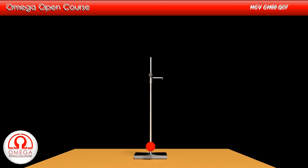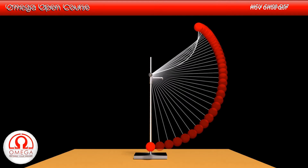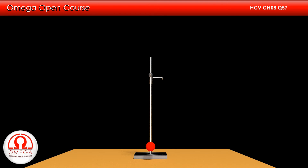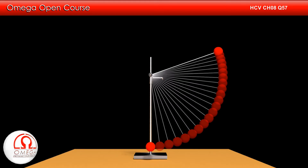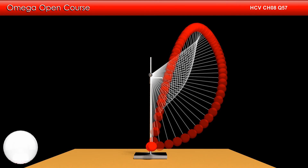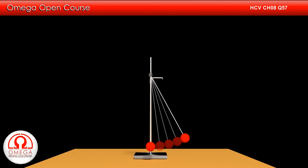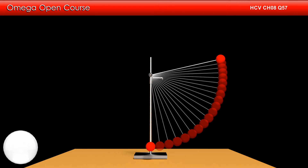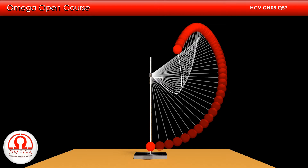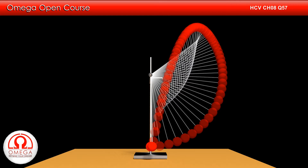Let us look at this animation properly. As the particle moves up, its gravitational potential energy increases while its kinetic energy decreases. Decreasing kinetic energy causes a decrease in speed, which in turn decreases the centrifugal force on the particle. Also, as the particle moves up, its angle with the vertical decreases, which increases the component of gravitational force along the string. When the component of gravity along the string becomes more than the centrifugal force, the centrifugal force is no longer able to keep the string taut and the string becomes slack.